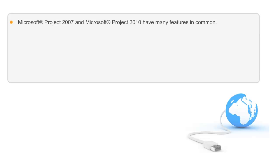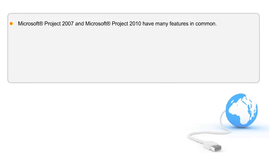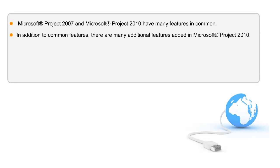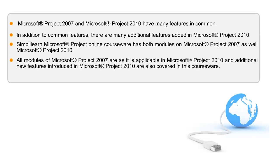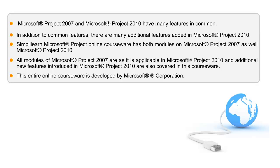Microsoft Corporation keeps releasing new versions of Microsoft Project from time to time. The versions which are quite popularly used are Microsoft Project 2007 and Microsoft Project 2010. While there are a number of additional features added in Microsoft Project 2010, a good number of Microsoft Project 2007 features are available in Microsoft Project 2010 as well. This online course covers the common modules of Microsoft Project 2007, which are applicable to 2010, as well as additional features introduced in Microsoft Project 2010.